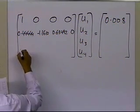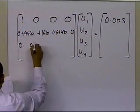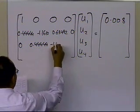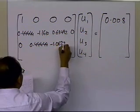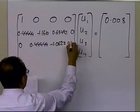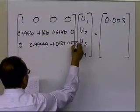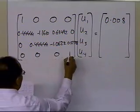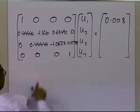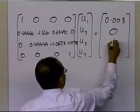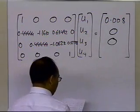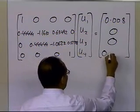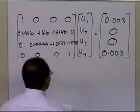The next row also comes from the finite difference approximations. The last row represents the boundary condition u_4 = 0.003, so it has entries 0, 0, 0, 1 with right-hand side 0.003 — coming from the finite difference approximation of the second-order differential equation.